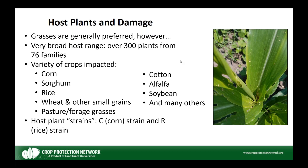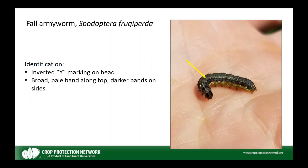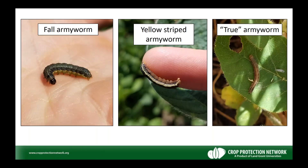For identification, there are several other caterpillars that look very similar to fall armyworm. The key features to look for are: a fairly distinct inverted-Y marking on the head with a wider yellowish marking; a broad pale band along the back; and four dark spots on the eighth abdominal segment. These characteristics help separate fall armyworm from other armyworm species more commonly seen in the Midwest. Management-wise, the best thing we can do in future years is to be vigilant and watch for reports from neighbors to the south.